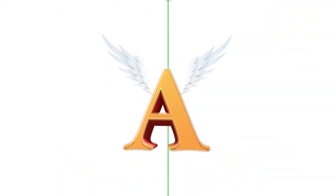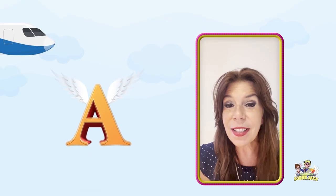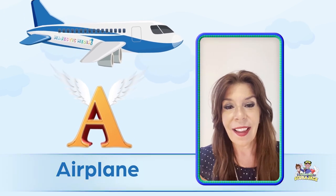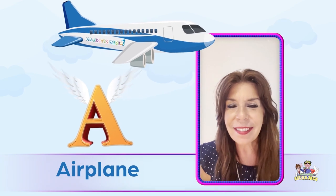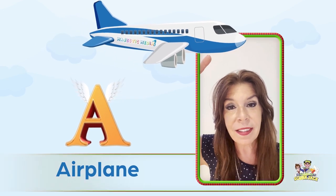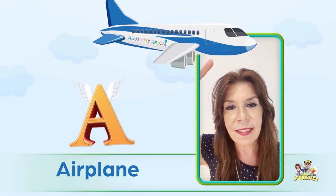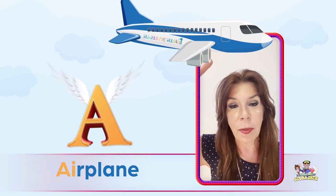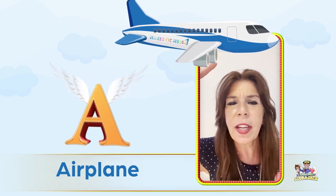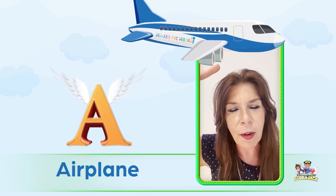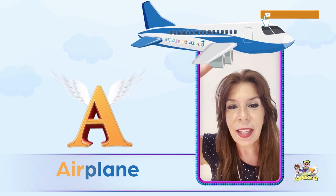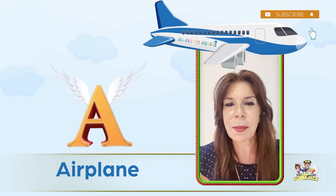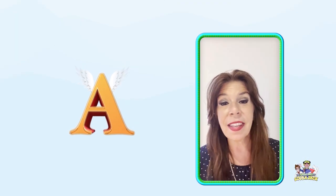The next word is airplane. Have you ever been on an airplane? I've been on an airplane — I like flying. Do you see the airplane above my head? What color is the airplane? That's right, it's white! Let's say airplane together — airplane, airplane, airplane! You're amazing, you're so smart!